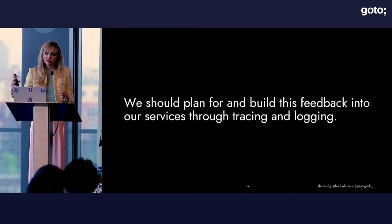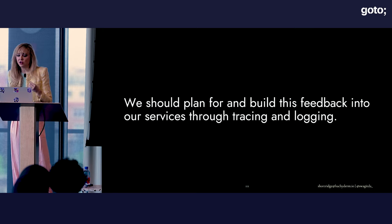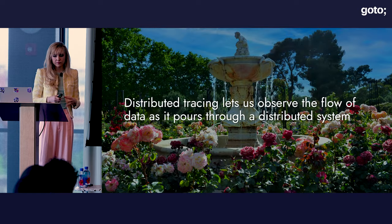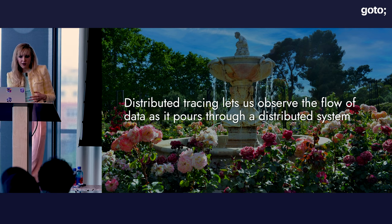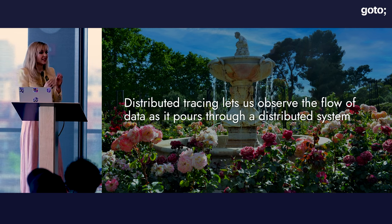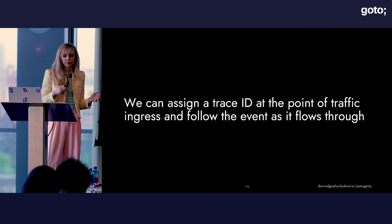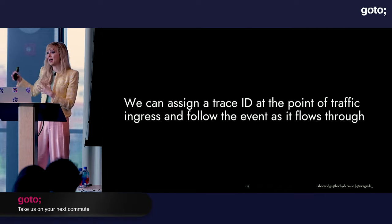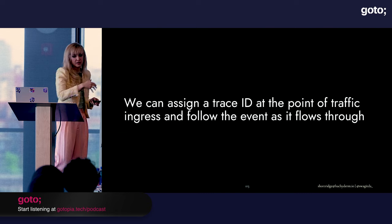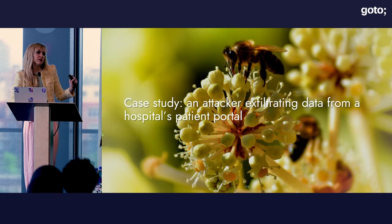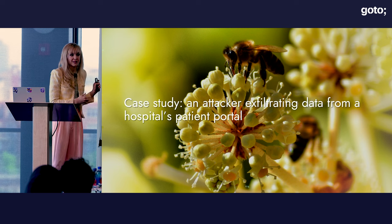Neither tracing nor logging is something you can bolt on after you've delivered your software — you can't apply it automatically to all the services you operate. This needs to be defined when you're writing the code, before it's delivered into production. Distributed tracing is a very specific slice of observability, and a really powerful way to observe the flow of data as it moves through a distributed system. Distributed tracing lets you stitch individual operations back to the original event. We can assign a trace ID at the point of traffic ingress, and that trace ID follows the event as it flows through the system.